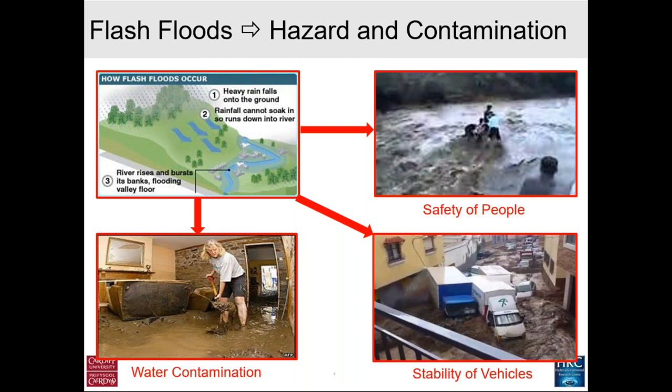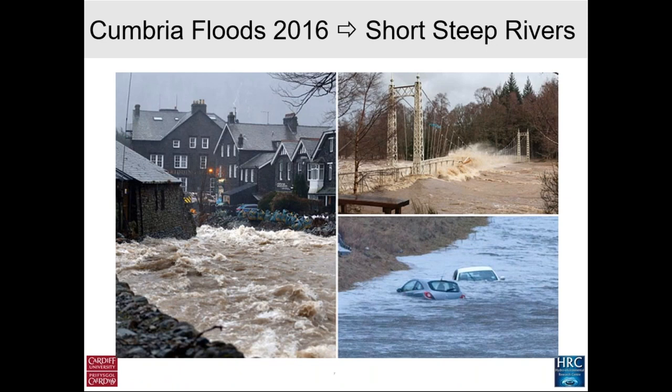Water contamination is a key concern. The worst thing for parents with young children is to know their house has been flooded with contaminated water. I'd like to talk about two types of floods. Short, steep rivers produce what we call supercritical flow — a very turbulent flow — which is extremely difficult to model. Even a student on a four-year civil engineering degree would not have covered enough fluid mechanics to understand the complexity of this problem.